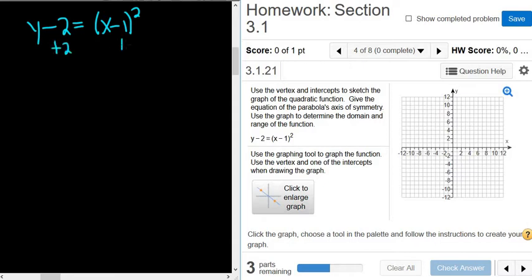So we'll add 2 to both sides, basically solve for y. So we get y equals (x minus 1) squared plus 2.